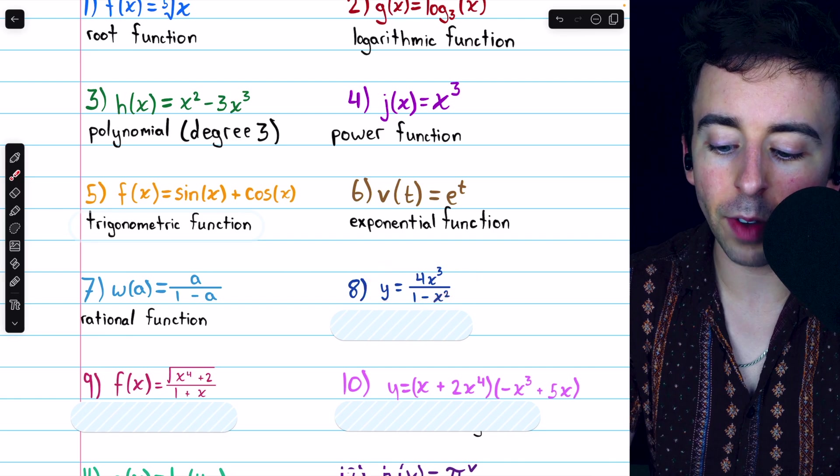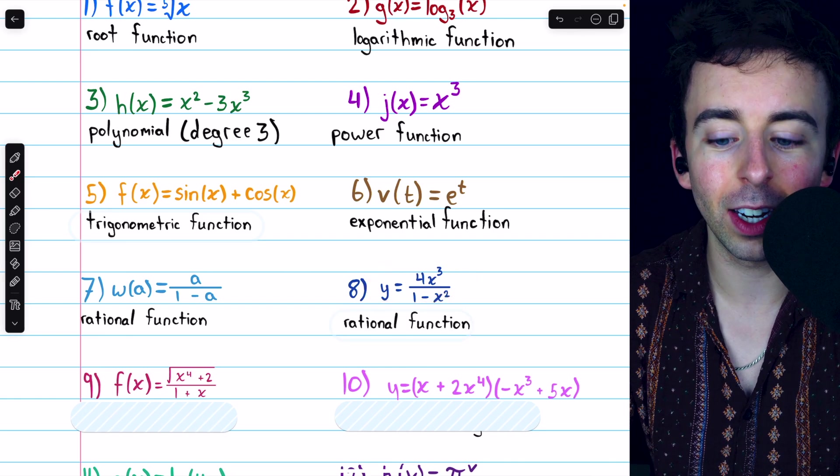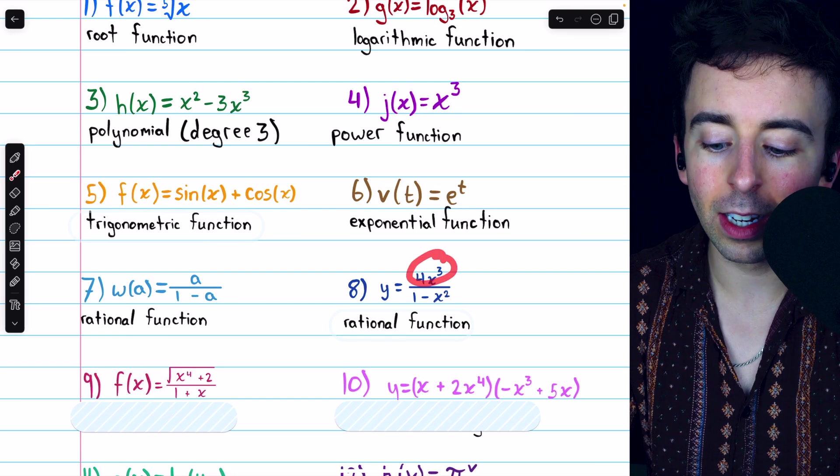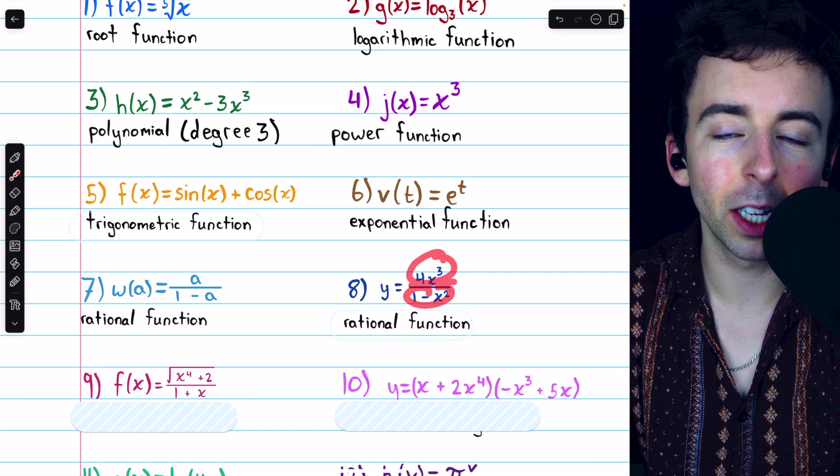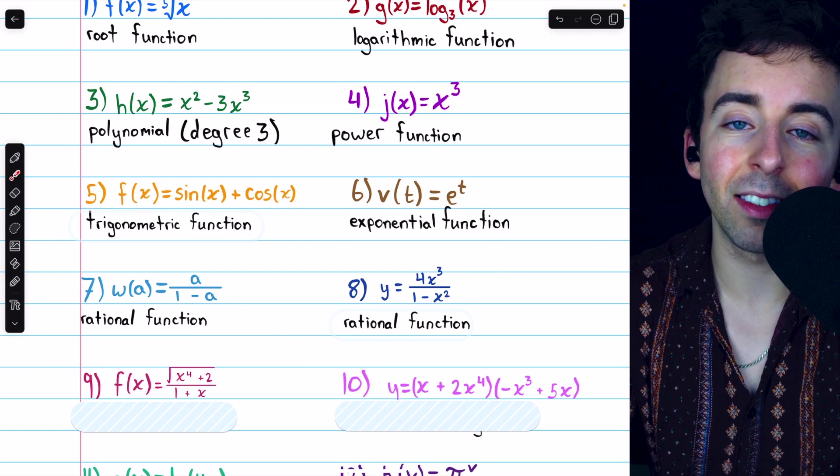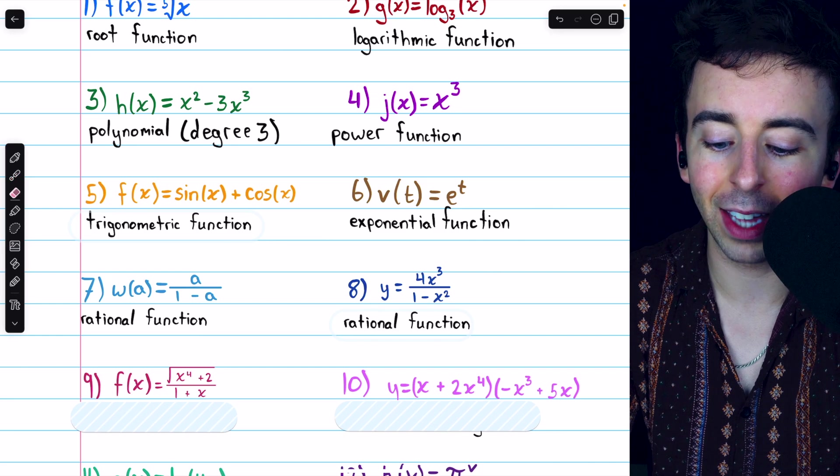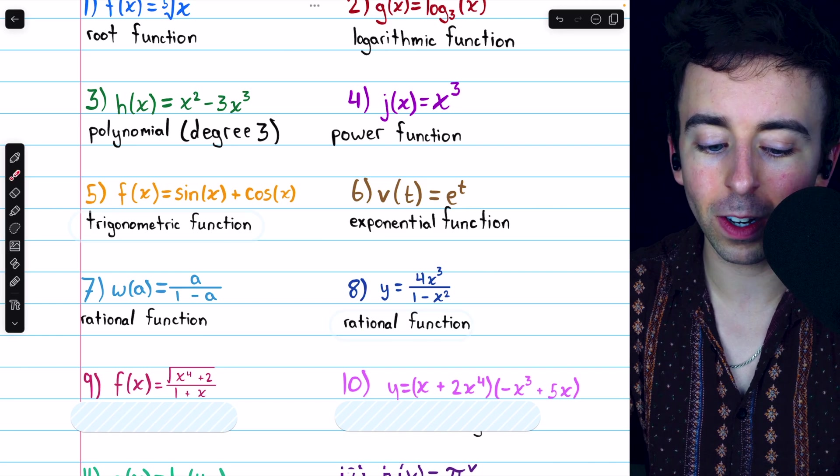Number eight, y equals 4x cubed divided by one minus x squared is again a rational function because it's a polynomial divided by a polynomial. Again, it also happens to be an algebraic function, but that is a broader class, so I'm going to use the more specific classification of rational function.